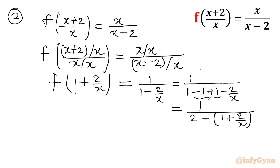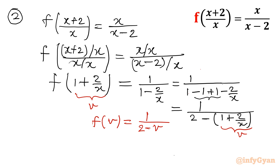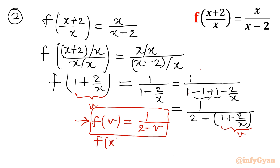Suppose I am replacing 1 plus 2 over x with variable v. I am not substituting — I am replacing. So my f of v equals 1 over 2 minus v, which is the same answer. No need to write x only — in any variable name you can write your answer. If you want to write in f of x, then f of x equals 1 over 2 minus x.